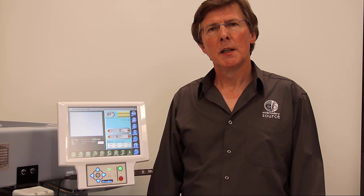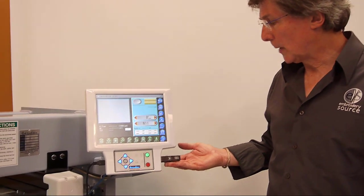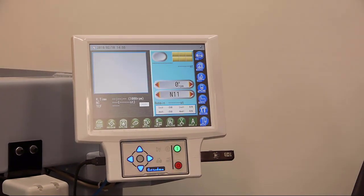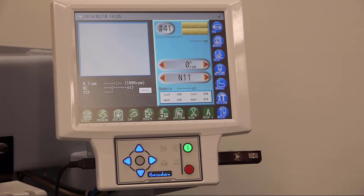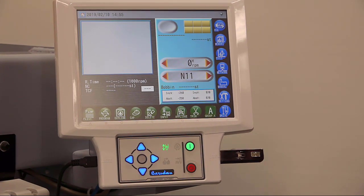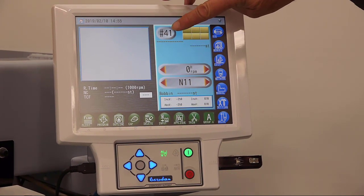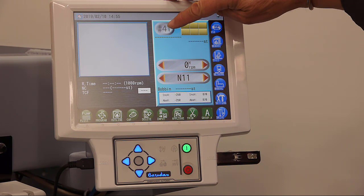Okay, let's have a look at how we would read a design into the machine memory from a USB memory device. We have one connected to the machine already. I'm going to show you the different ways that we can find a design and load it into the memory. Currently, the memory position 41 is flashing, which means it's empty.